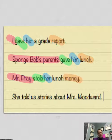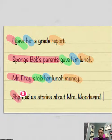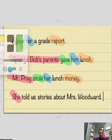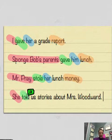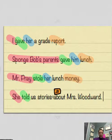Next one down. She told us stories about Mrs. Woodward. Okay, hope they were good stories. Now in this case the action, the person doing the action is she. What did she do? She told. And what did she tell? She told us stories. Stories, so stories is going to be our direct object.